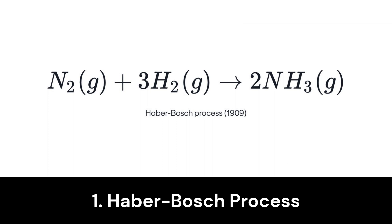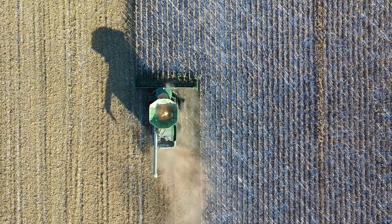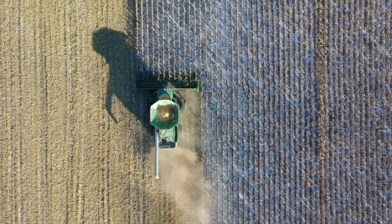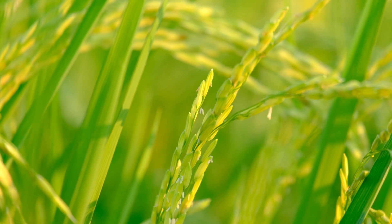Our journey begins with the Haber-Bosch process, a reaction that unlocked the power of ammonia synthesis. The equation is simple: nitrogen gas plus hydrogen gas combine under high pressure and temperature, yielding ammonia gas. This incredible process allowed the mass production of synthetic fertilizers, boosting agricultural output and supporting the world's growing population.